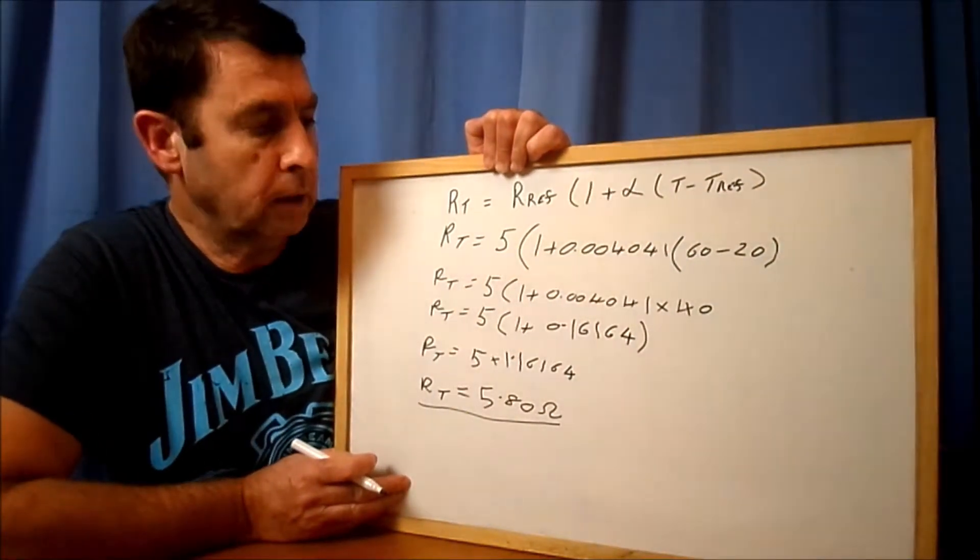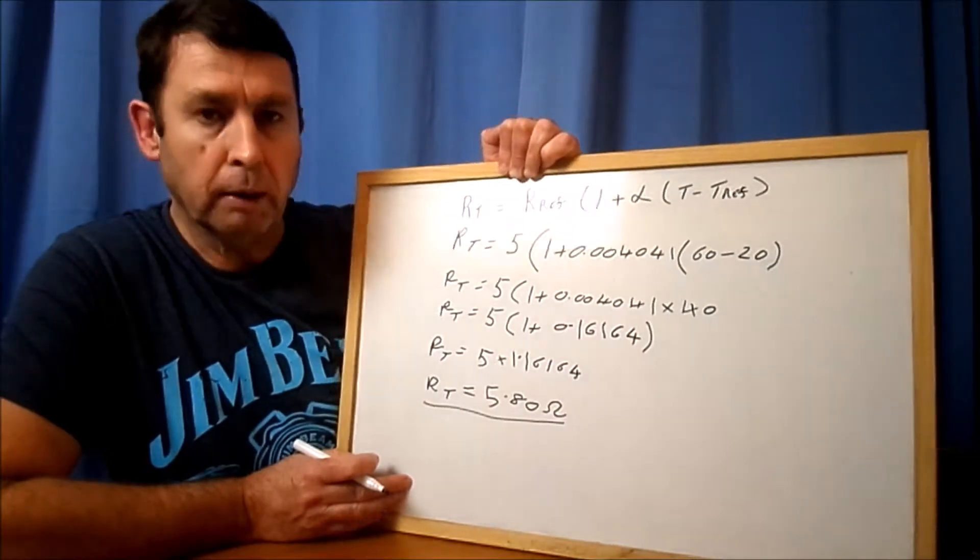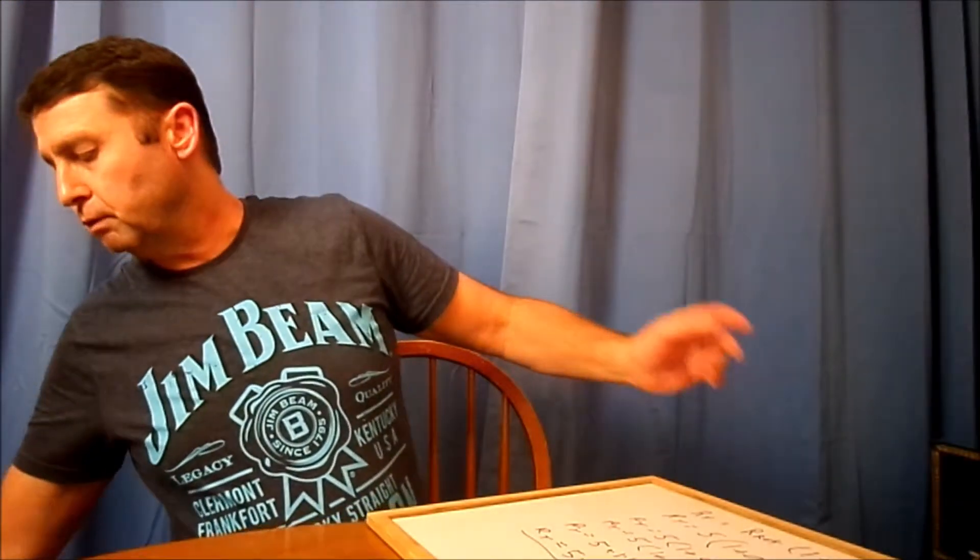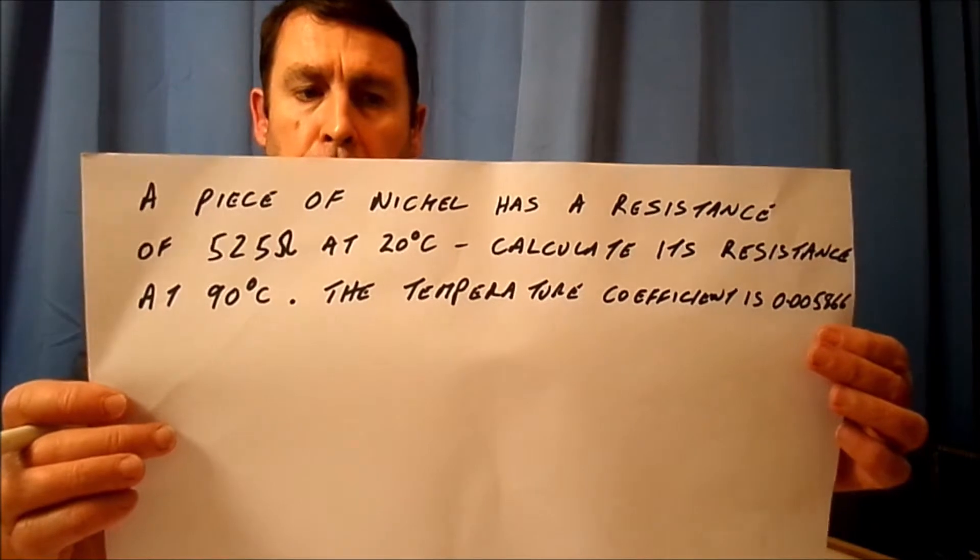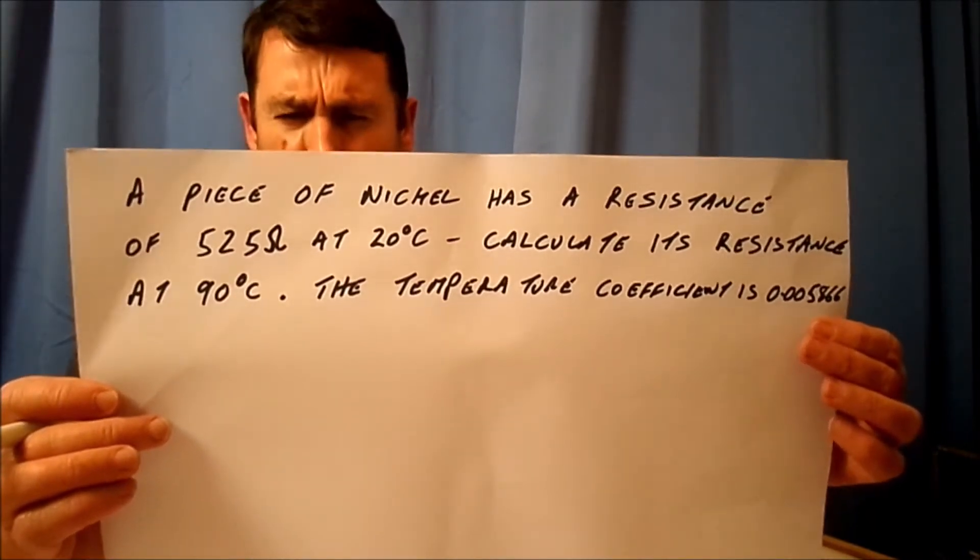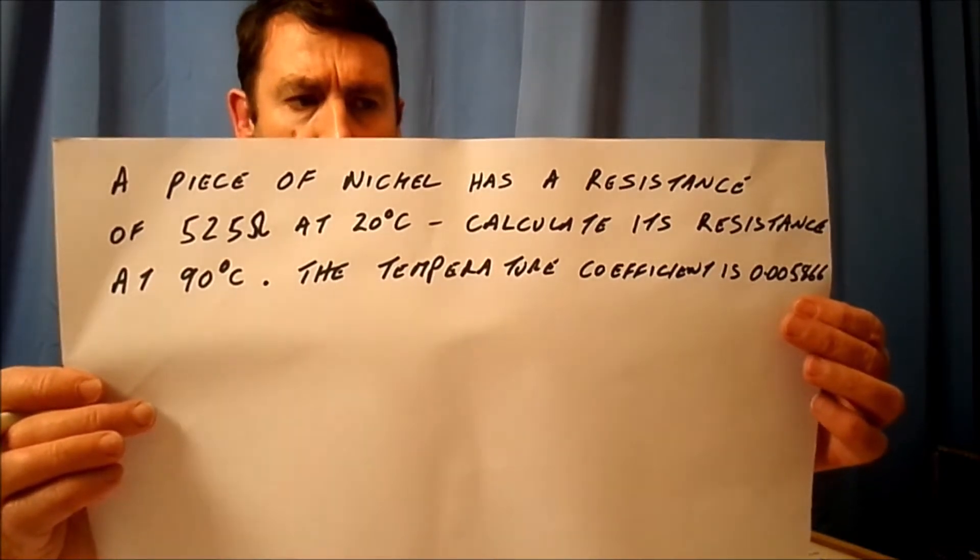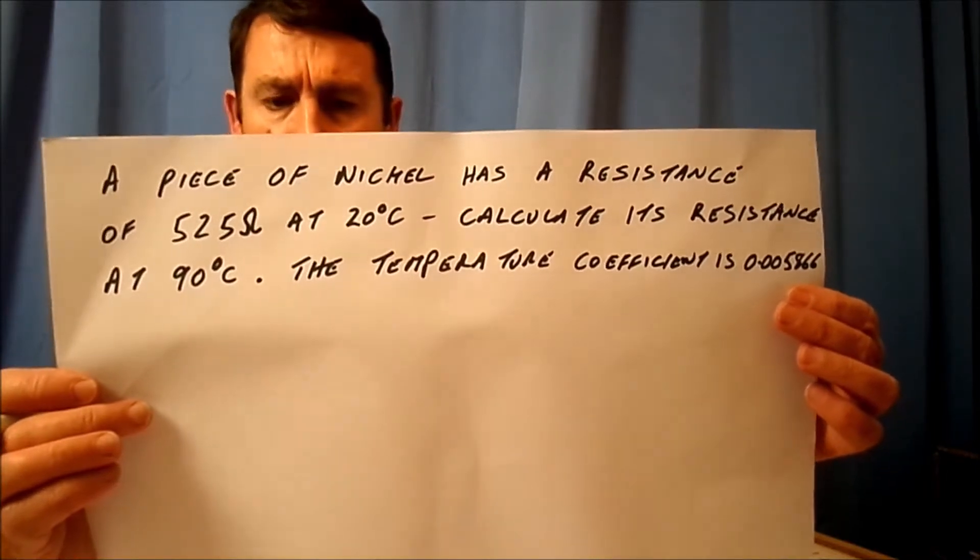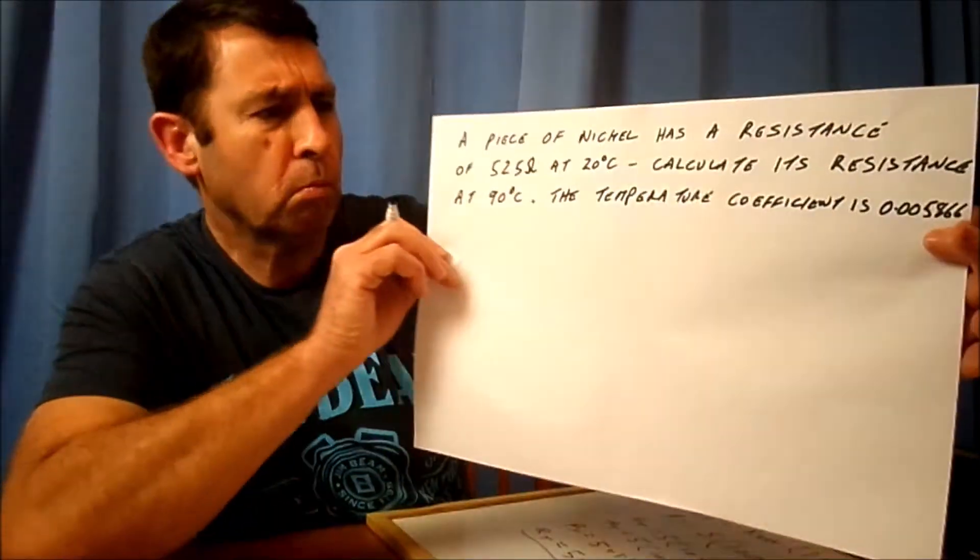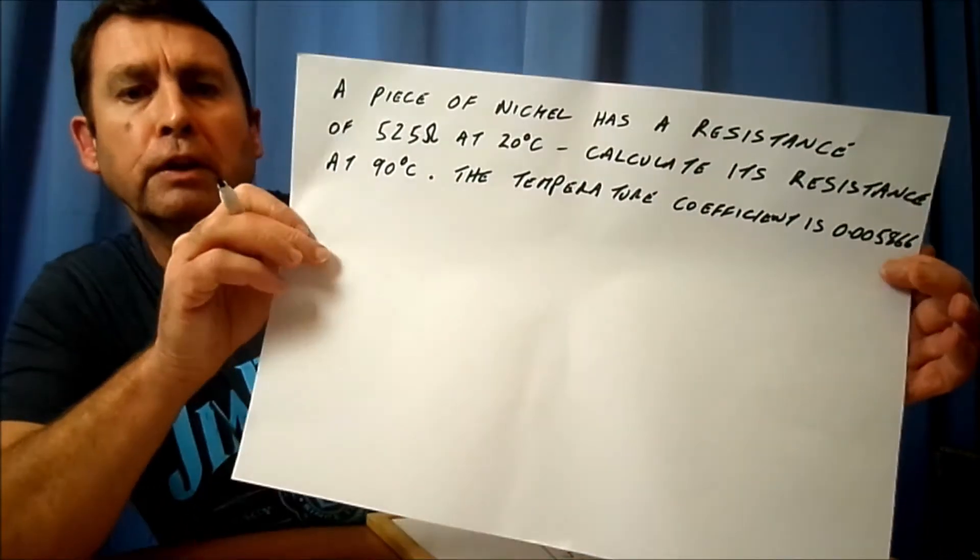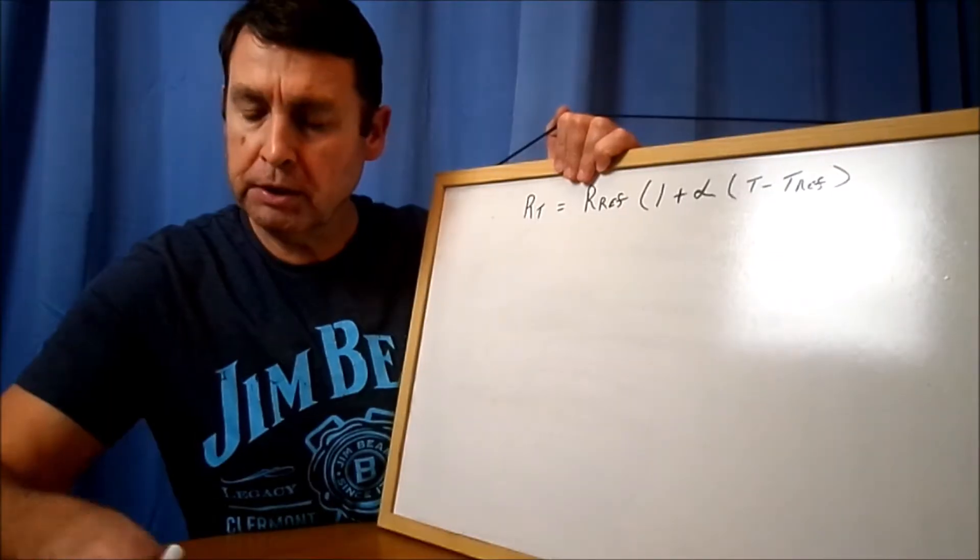That's quite simple, isn't it, when you look at it logically in that format. It really is quite simple. So with that in mind, what I want you to do is, like we've done previously, have a go at this question yourselves. A piece of nickel has a resistance of 525 ohms at 20 degrees C. Calculate its resistance at 90 degrees C. The temperature coefficient is 0.005866.